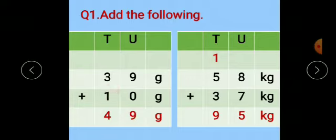Next example: 58 kg plus 37 kg. Now 8 plus 7 is 15. So write 5 here. 1 is carrying over to the next place. After that, 3 plus 5 is 8. 8 plus 1 is 9. Answer is 95 kg.